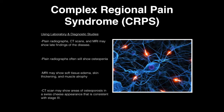Under laboratory and diagnostic studies, plain radiographs, CT scans, and MRI may show late findings of the disease. Plain radiographs will also show osteopenia, often because of decreased movement. MRI may show soft tissue edema, skin thickening, and muscle atrophy. CT scan may also show areas of osteoporosis and a Swiss cheese appearance consistent with stage 3.